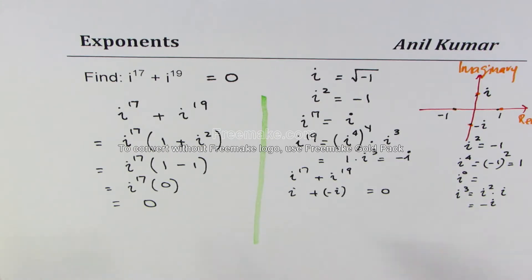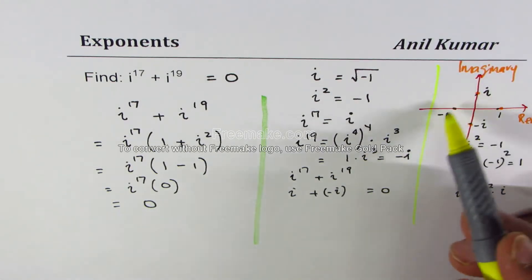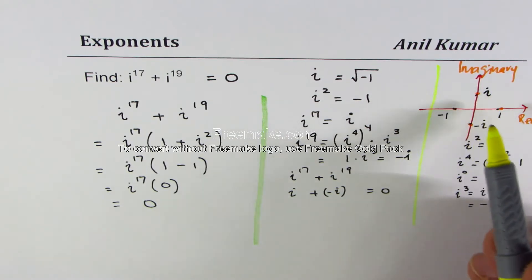Either way you get the same answer which is 0. I hope you understand and appreciate both the methods. I added this portion on the right for benefit of my students who may not understand how to work with i and get its power.